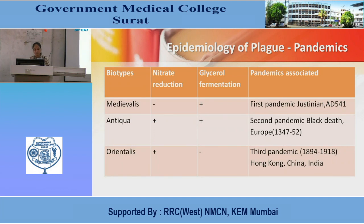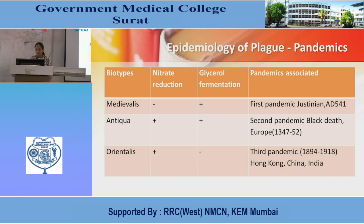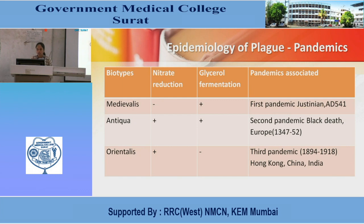Epidemiology of plague: it causes pandemics. Biotypes are medievalis, antiqua, and orientalis. Nitrate reduction in medievalis is negative; glycerol fermentation is positive. The first pandemic associated with medievalis is the Justinian pandemic in AD 541. Antiqua has nitrate reduction positive and glycerol fermentation positive, associated with the second pandemic — the Black Death in Europe from 1347 to 1352. Orientalis has nitrate reduction positive and glycerol fermentation negative.